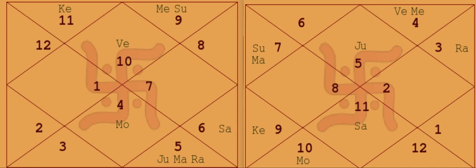Many times people think that we should only check the D9 chart without seeing the D1 chart — that is not true, that will lead to disasters. We should always start with the D1 chart, check the strength and situation of the D9 later, and also what is the situation of the planets in D1 — well placed or badly placed, how are they placed in the Navamsa chart. We should also check the transitions.